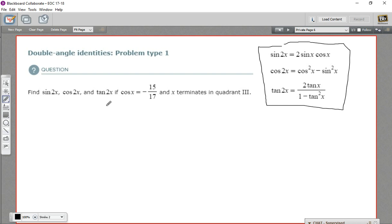In this particular problem, we want to find all of those, the sine of 2x, cosine of 2x, tangent of 2x, and we're given the cosine as a ratio, and we're told which quadrant it terminates in. That information is enough for us to get the sine as well, so that'll be enough to use these identities.